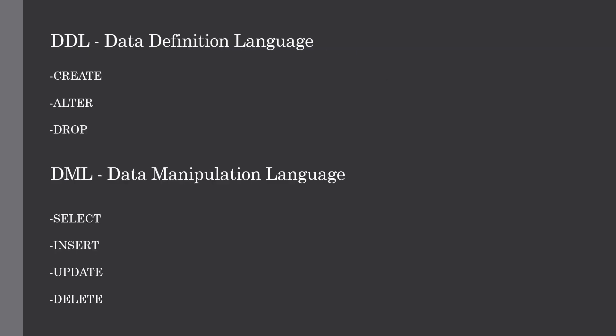Data Definition Language (DDL) is a syntax for creating and modifying database objects such as tables, indices, and users. DDL statements are similar to a computer programming language for defining data structures, especially database schemas. The three major DDL commands are: CREATE — which creates a new table, view, or other database object; ALTER — which modifies an existing database object; and DROP — which deletes an entire table, view, or other database object.